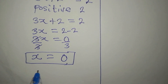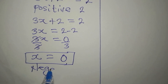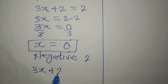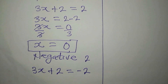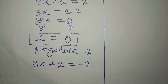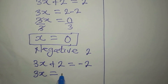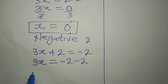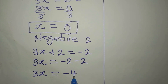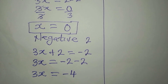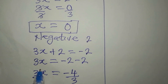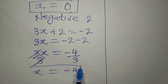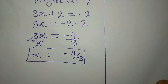Now we pick the negative 2. So 3x + 2 = negative 2, which means 3x = negative 2 minus 2 = negative 4. Dividing both sides by 3, x = negative 4 over 3. That gives us another solution.